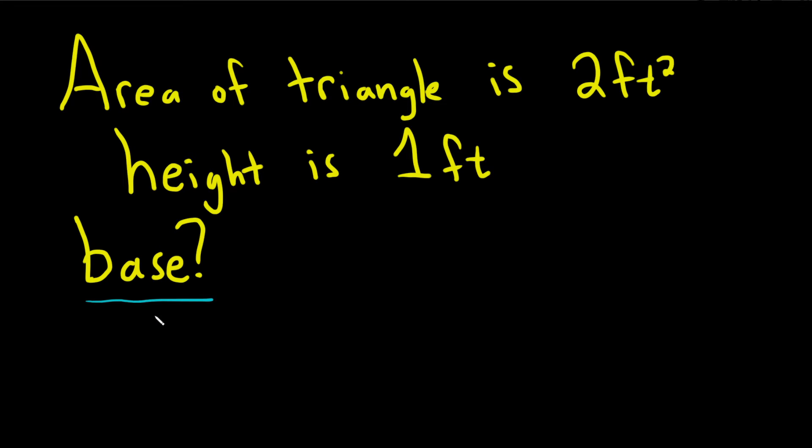So the first thing you want to do in a problem like this is write down the formula for the area of a triangle. The formula for the area of a triangle is A, where A is the area, and then it's 1 half base times height.